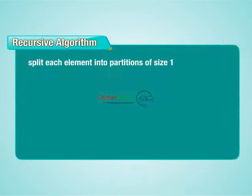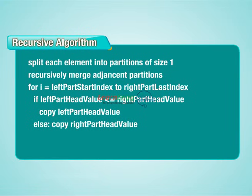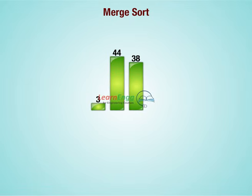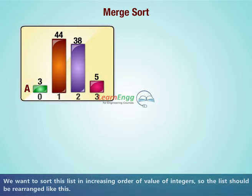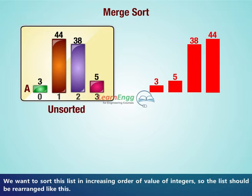Merge sort is a recursive algorithm. Using this algorithm, we are going to sort elements in a faster manner. Let's pick a very simple sorting scenario. Given a list of integers in the form of an array, let's name this array A. We have four elements in the array, so we have indices from 0 to 3. We want to sort this list in increasing order of value of integers, so the list should be rearranged.